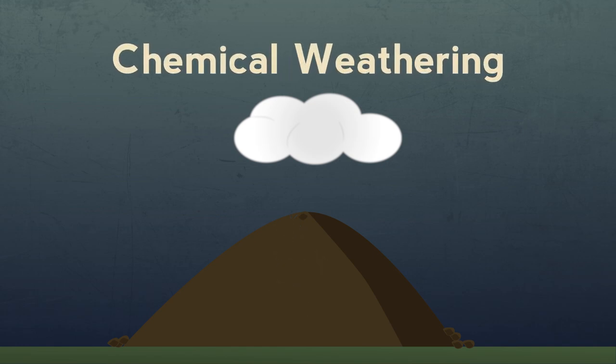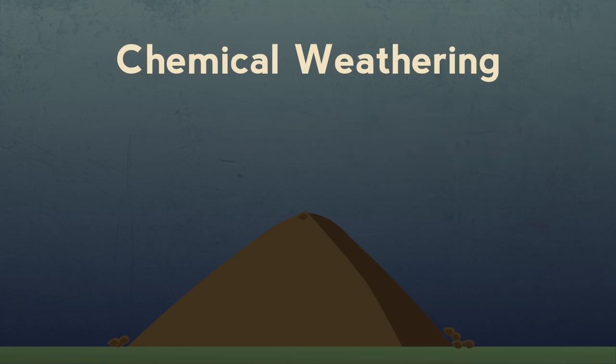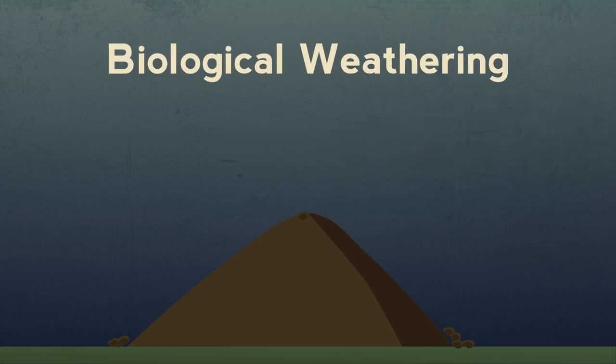Chemical weathering is when rain which is slightly acidic dissolves some minerals in the rock. Biological weathering happens as lichens and then the roots of plants grow on the rocks forcing their grains apart.